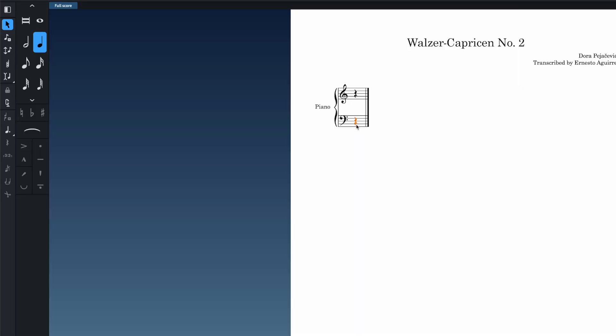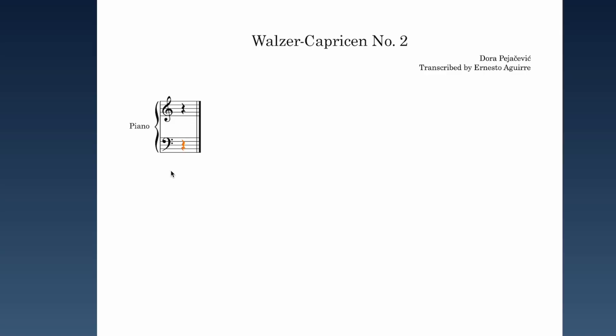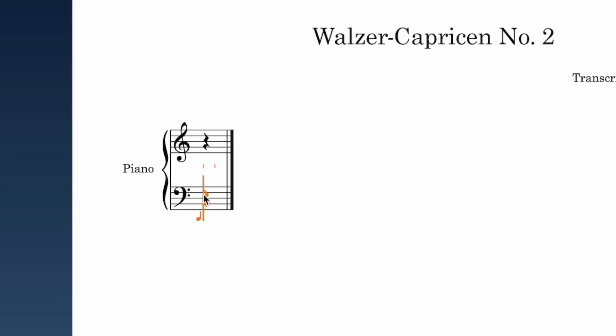In Dorico there are basically two modes you work in: you're either inputting music or you're editing music. You can double-click on the staff, hit Enter, hit Shift+N, or click the Start Note Input button — all of those will invoke note input mode. I usually just hit Enter. You know you're in note input mode if you see this little note head, a rhythm grid, and this long orange line called the caret.